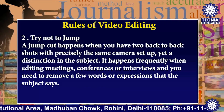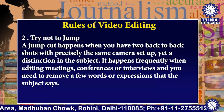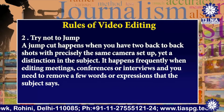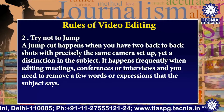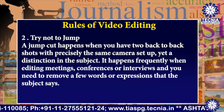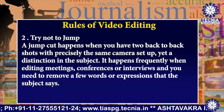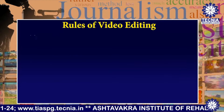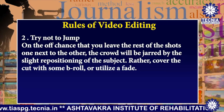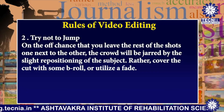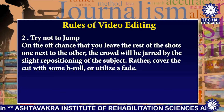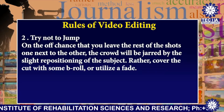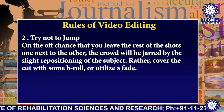Rule number two: try not to jump. A jump cut happens when you have two back-to-back shots with precisely the same camera setup, yet a distinction in the subject. It happens frequently when editing meetings, conferences, or interviews and you need to remove a few words or expressions that the subject says. If you leave the rest of the shots side by side, the crowd will notice the slight repositioning of the subject. Rather, cover the cut with some b-roll footage or utilize a cutaway.